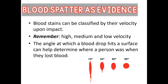The angle at which a blood drop hits a surface can help investigators determine where a person was when they lost blood, and there is a formula for that. The more circular the shape, the closer to 90 degrees. The further we move from that 90-degree angle, the more elongated the blood gets and the more of a tail it has. You can see the comparison between blood that hit a surface at 10 degrees versus 90 degrees.